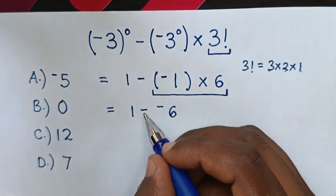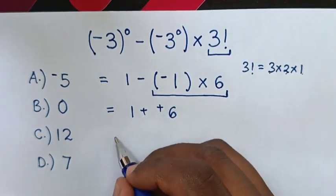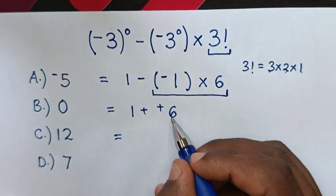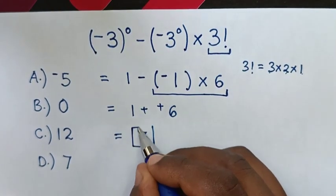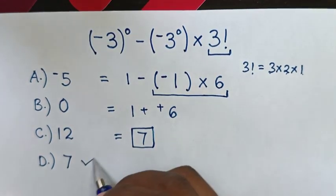Then, because there is negative, negative, so it will be positive. Then, it will be equal to 1 plus 6 is 7. So, this is our final answer. To select in the multiple choice, it is D.